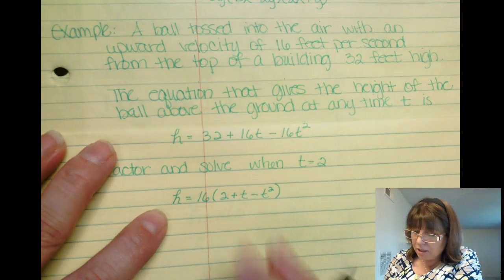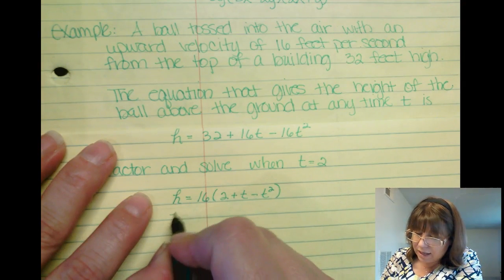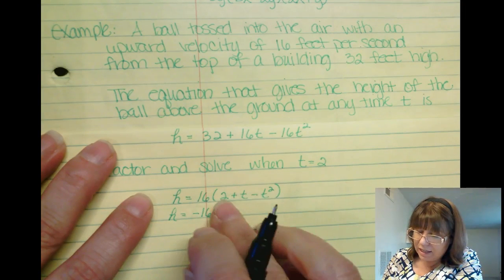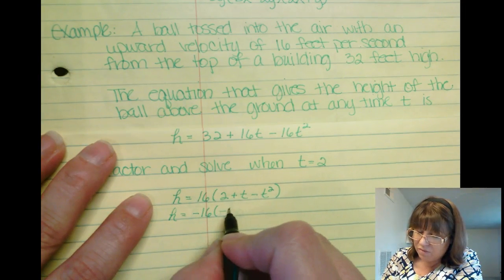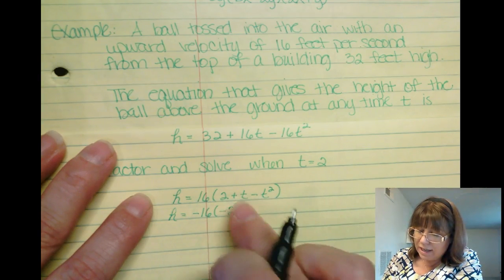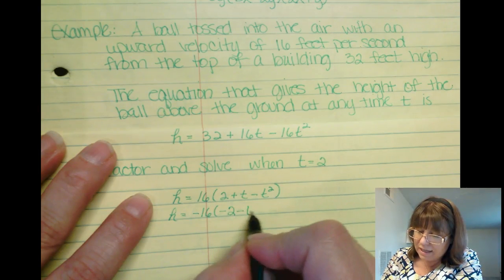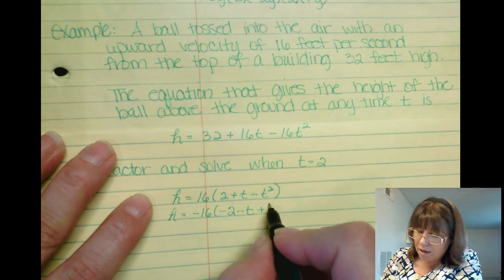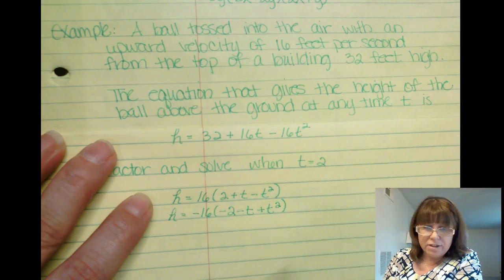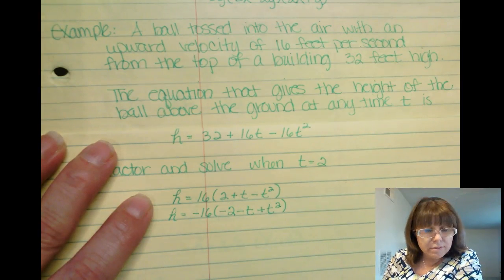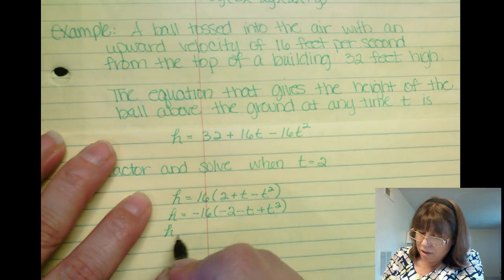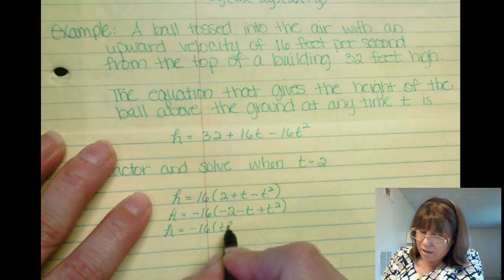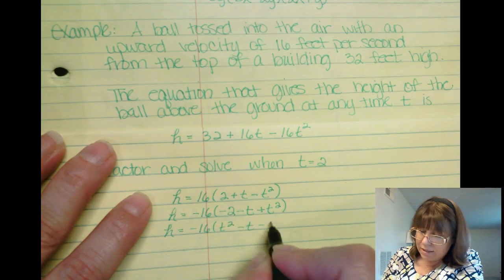So I'm going to do a little middle trick. I'm going to factor out a negative 16. If I take a negative from a positive, that would leave me a negative 2. Take a negative from a positive, that's negative t. A negative from a negative leaves me a positive t squared. Now I'm going to rewrite it in an order that makes sense to me: t squared minus t minus 2.